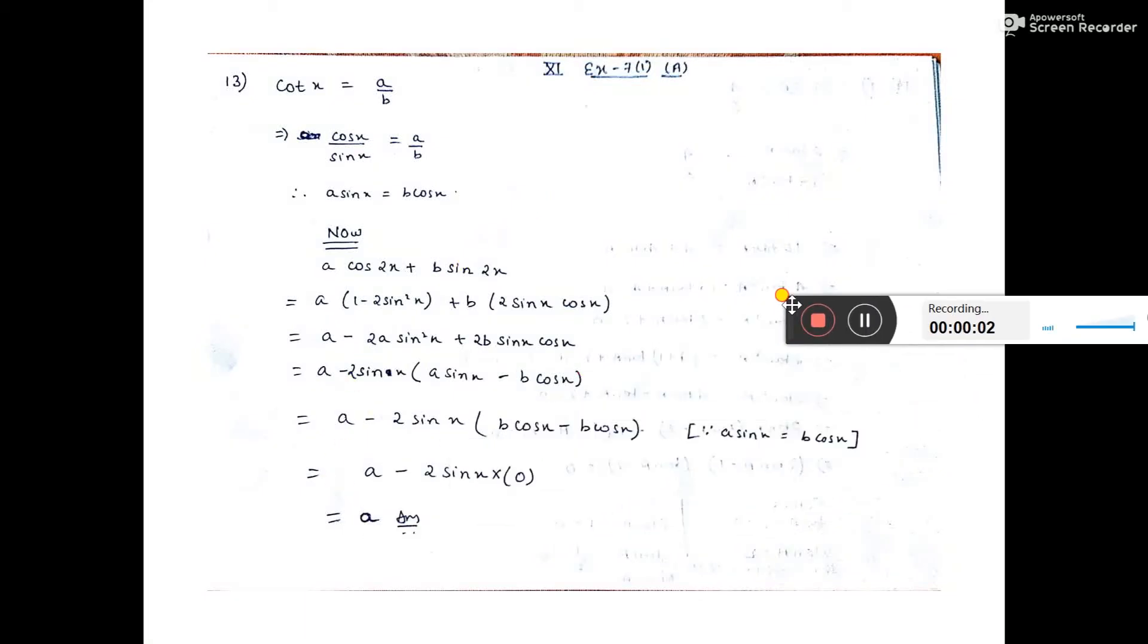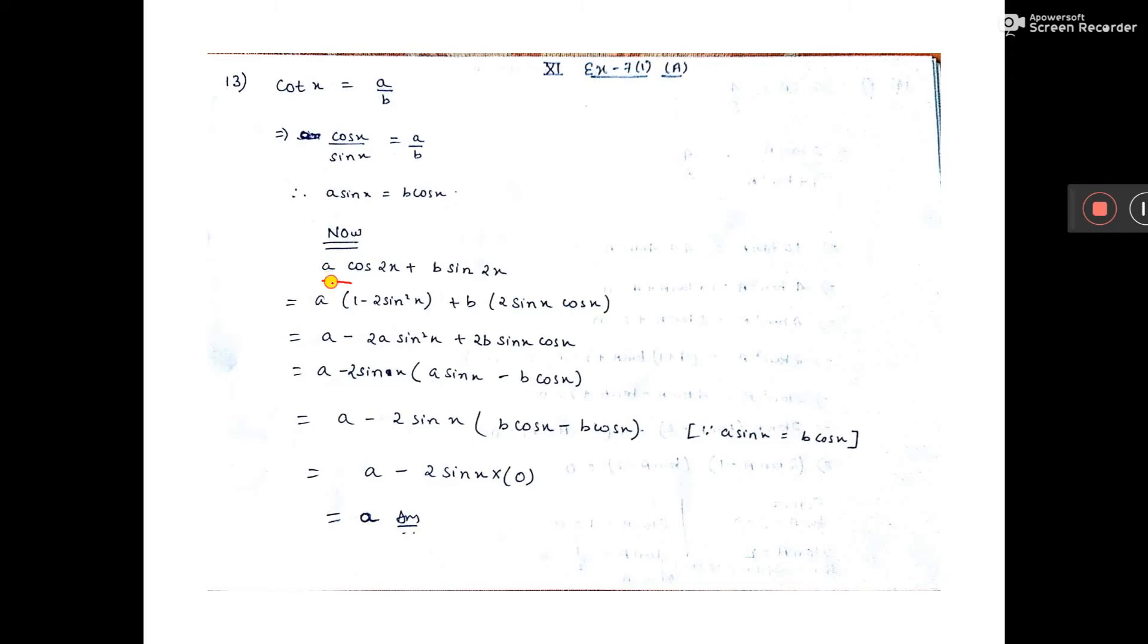cot x is equal to a by b. We have to find a cos 2x and b sin 2x value.